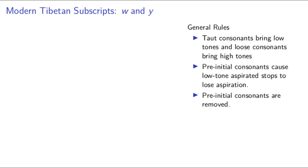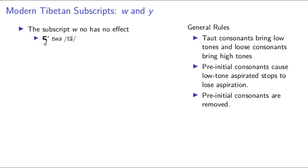In Old Tibetan, wa subscript corresponded to a post-initial labial glide. But sometime around the 9th century that glide was lost and this subscript does nothing — it isn't pronounced and it never affects tone or aspiration. As far as the modern language is concerned, it's just a homophone distinguisher. Loss of labialization isn't too rare in languages. Modern Greek, for example, has lost the labial approximate entirely.